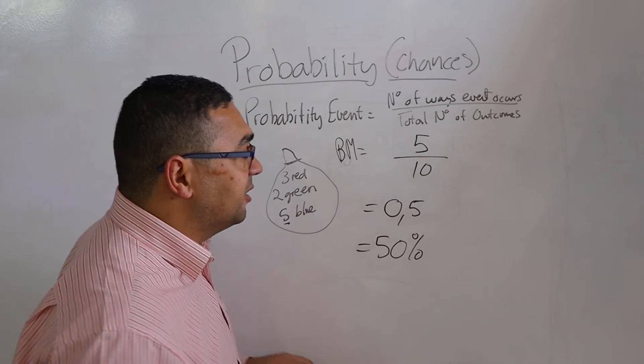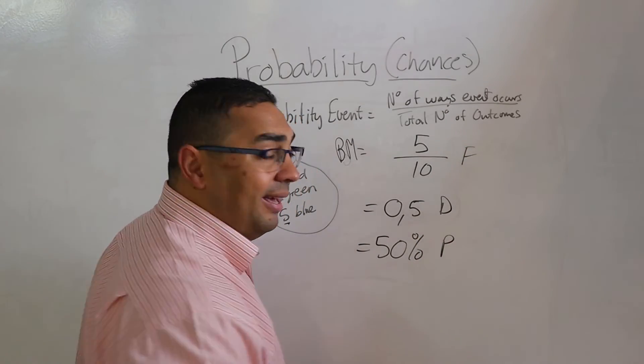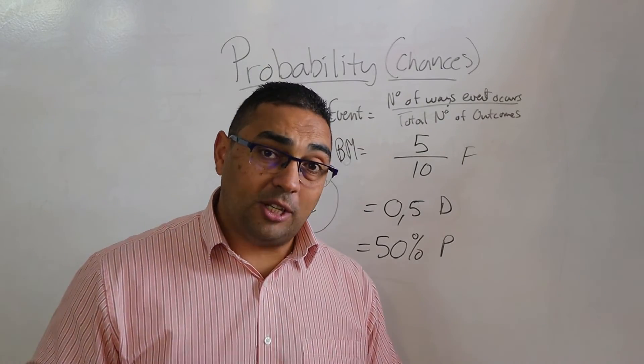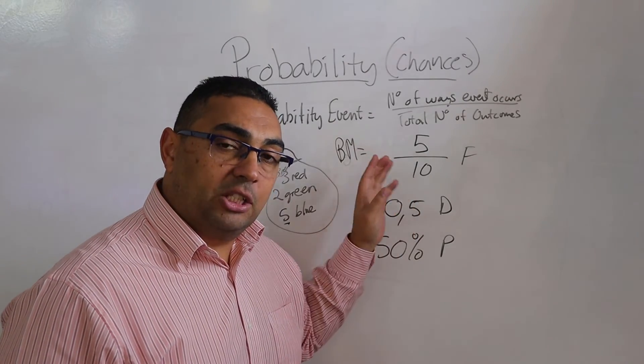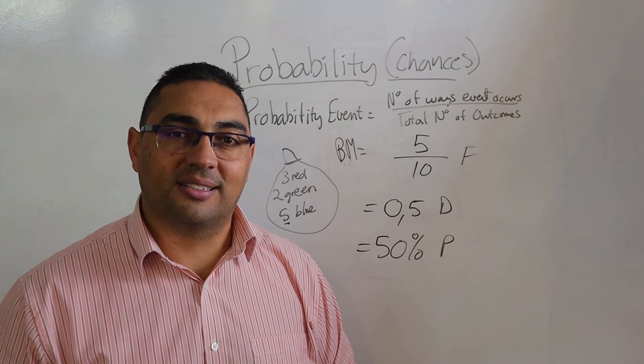Now I hope you can see the following as well: that my probability can be expressed as a fraction, as a decimal, and as a percentage. Just watch the wording of your questions when it comes to that, to decide what they actually want, and then give them what they want in order to get the marks.